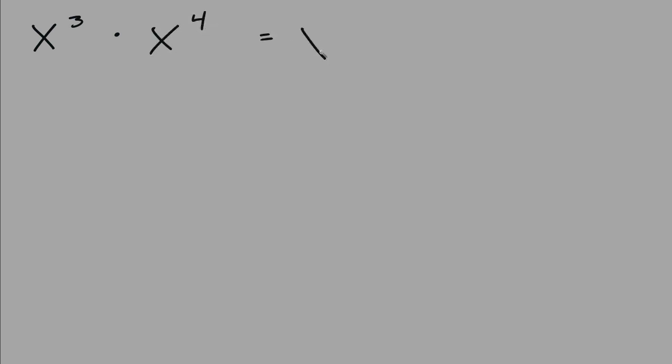This is called combining like terms. Next we'll be multiplying variables with exponents. When the terms being combined are multiplied, the variables must be the same but the exponents can be different. For example, x to the power of 3 multiplied by x to the power of 4 is the same as x to the power of 3 plus 4. You just add the exponents, so the answer is x to the power of 7.